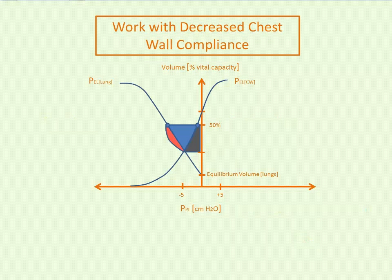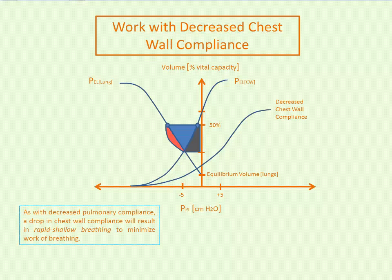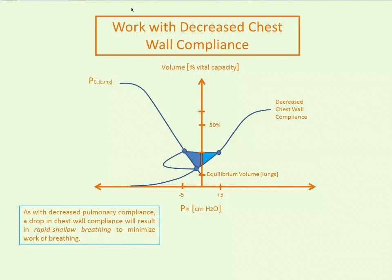With decreased chest wall compliance — from massive ascites, massive obesity, or abdominal compartment syndrome — the chest wall compliance curve shifts down and to the right. Just as with decreased pulmonary compliance, this results in rapid shallow breathing to minimize the large increase in static work of breathing. The dynamic work of breathing also increases somewhat due to increased airways resistance at low lung volumes.